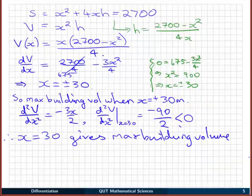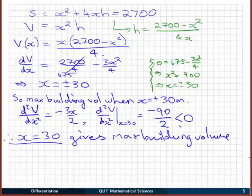Now, we should check also the endpoints of the domain, so the endpoints for x. Now, x going towards zero, or even minus infinity, doesn't make a lot of sense. It's not going to be a very big building. If it goes towards infinity, it also doesn't make sense. We can't build a building like that. So I'm going to stick with what we've found from the local maximum and say that that's the one that's going to give us our maximum building volume.